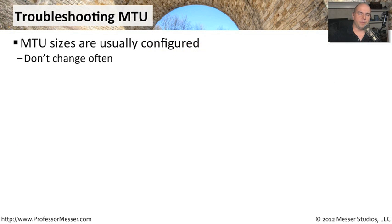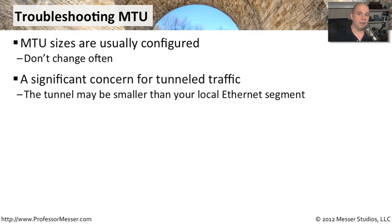The maximum transmission unit size is generally configured on a router or some other transmission device where it is hard-coded. It is set in that system and doesn't change very much. Once you configure a link and set up an MTU between those two connections, it's not going to be reconfigured very often. So as soon as we figure out what that most optimal MTU might be, we know it's not going to change week to week or day to day. It's these tunneled connections that usually are going to cause the problems for us.